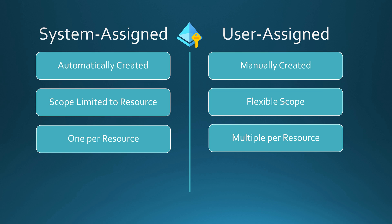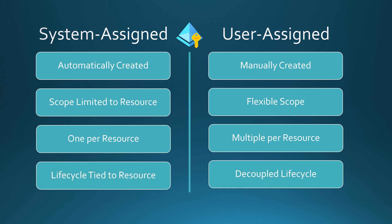The fourth key difference is that the lifecycle of the system managed identity is tightly tied to the resource — if you delete the resource, the identity is gone. But with user assigned, they are decoupled, meaning if you delete the resource, the user assigned managed identity will still live on. Now you should have an understanding of what system assigned and user assigned managed identities are, how to use them, and what the key differences are between the two.